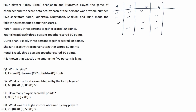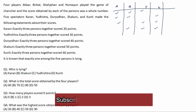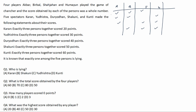We have 5 spectators — Karan, Yuzischar, Duryodhan, Shakuni, and Kunti — and it is known that exactly 1 among the 5 persons is lying. So if one person is lying, that statement is invalid and the rest are valid. We have total possibilities: 1st possibility, 2nd possibility, 3rd possibility, and 4th possibility.